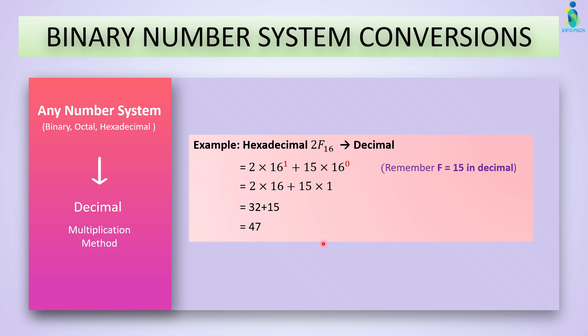Up till now we covered two techniques: converting numbers from decimal to any number system, and from any number system to decimal. We learned the multiplication/positional value method and the division method. Now, tell me in the comment box: after the division method, from which direction do we read the remainders? And second question: from which direction do we write the positional values? Now let's learn technique number three.